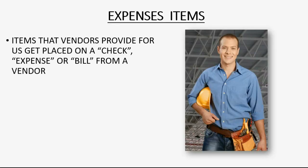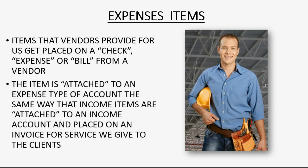Expense items are items that vendors provide for us, and when we purchase them, they get placed on a check or a bill from a vendor. The item is attached to an expense type of account, the same way that income items are attached to an income type of account and placed on an invoice for services we give to clients.